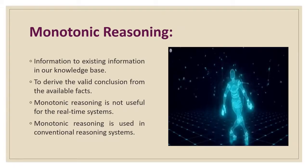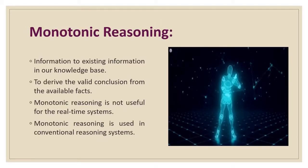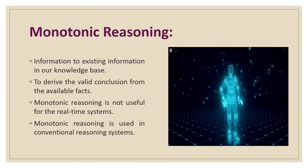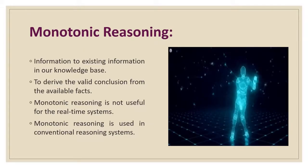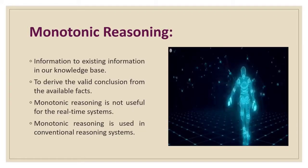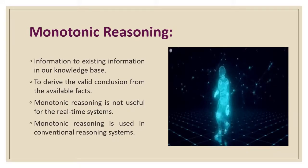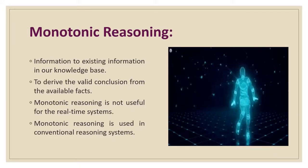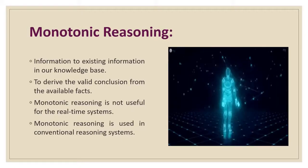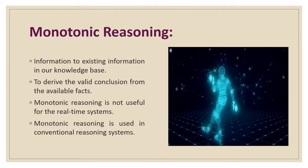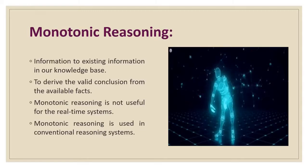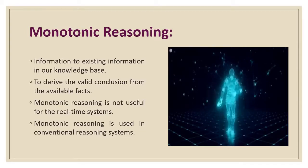An example of monotonic reasoning: the earth revolves around the sun — this is a true fact and it cannot be changed even if we add another sentence to the knowledge base, such as the moon revolves around the earth, or the earth is not round. The advantages of monotonic reasoning are that each proven fact will always remain valid, and we can derive new facts from available facts and they will remain valid always.